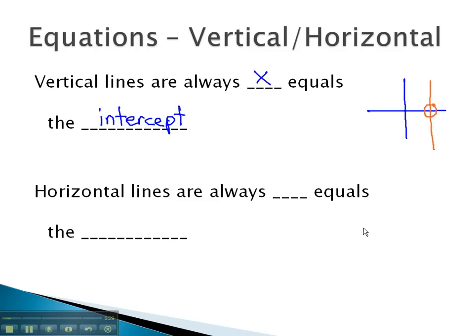Similarly, a horizontal line, when graphed, will go through the y-axis. For this reason, the horizontal line is always y equals the intercept.